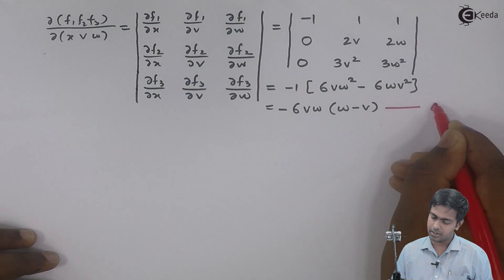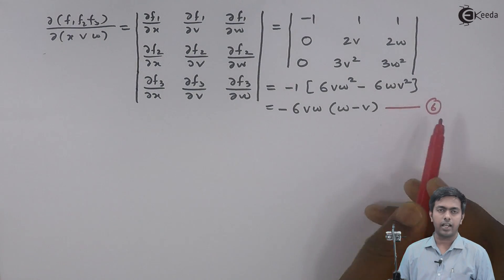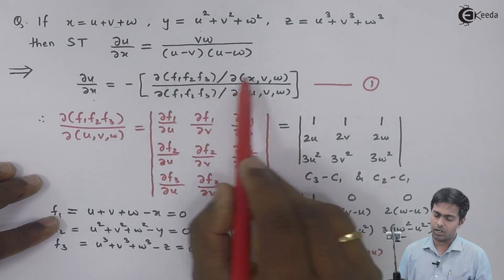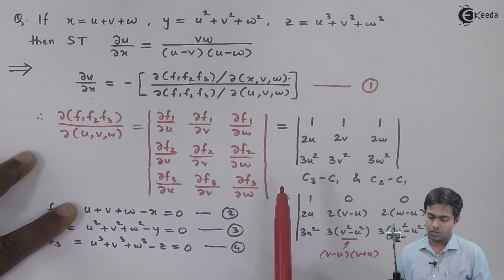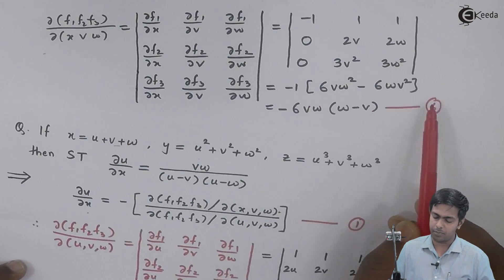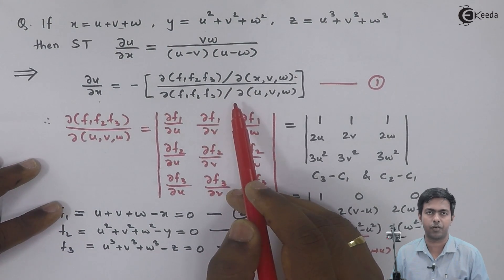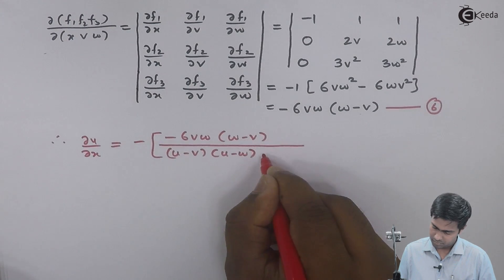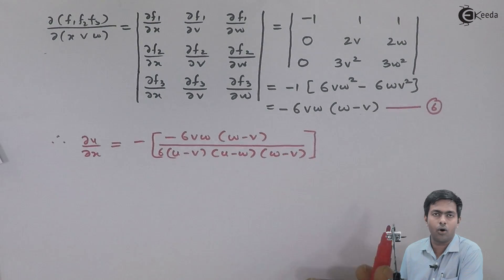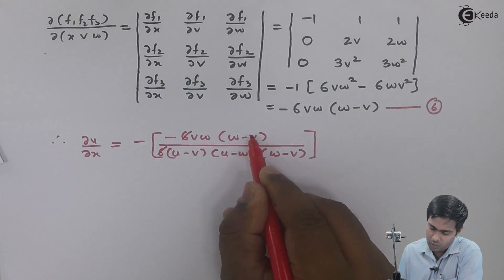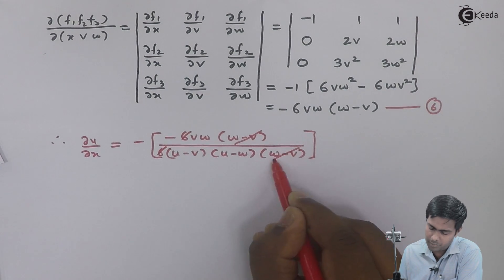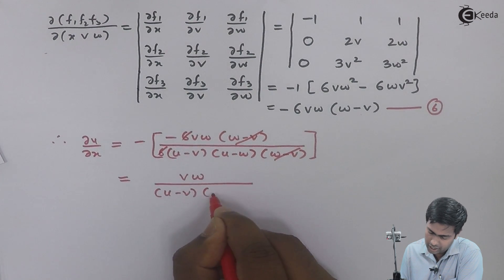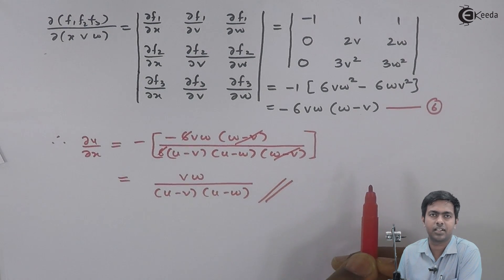Now let's substitute equations 5 and 6 into equation 1. In the numerator we substitute equation 6 and in the denominator equation 5. Cancelling 6 with 6 and (w − v) with (w − v), we get vw upon (u − v)(u − w), which is the required result. Thank you.